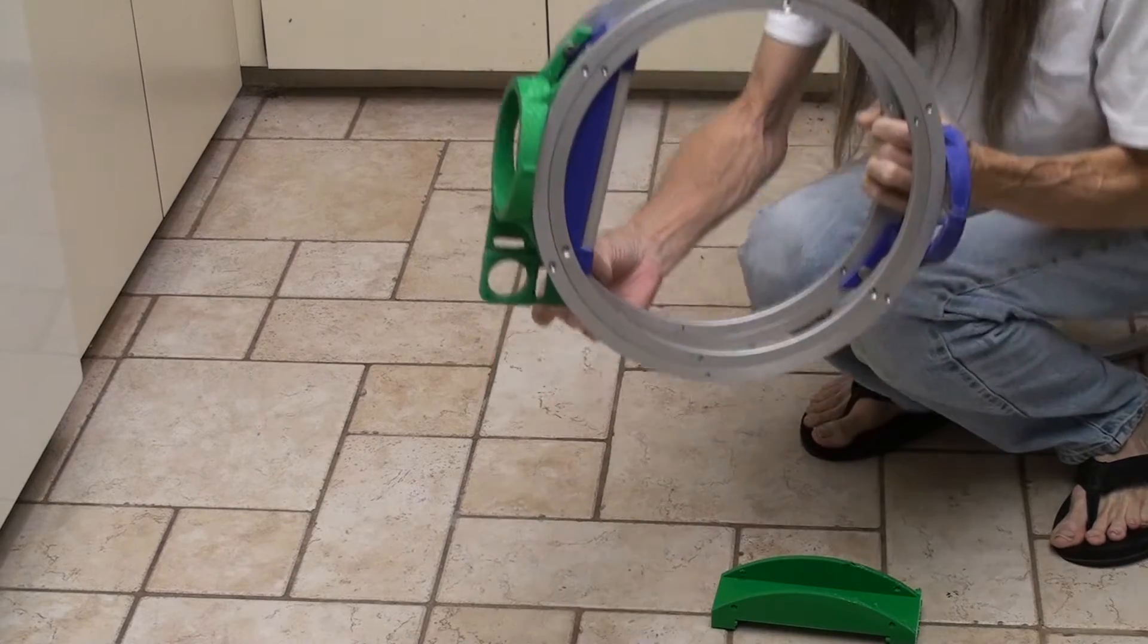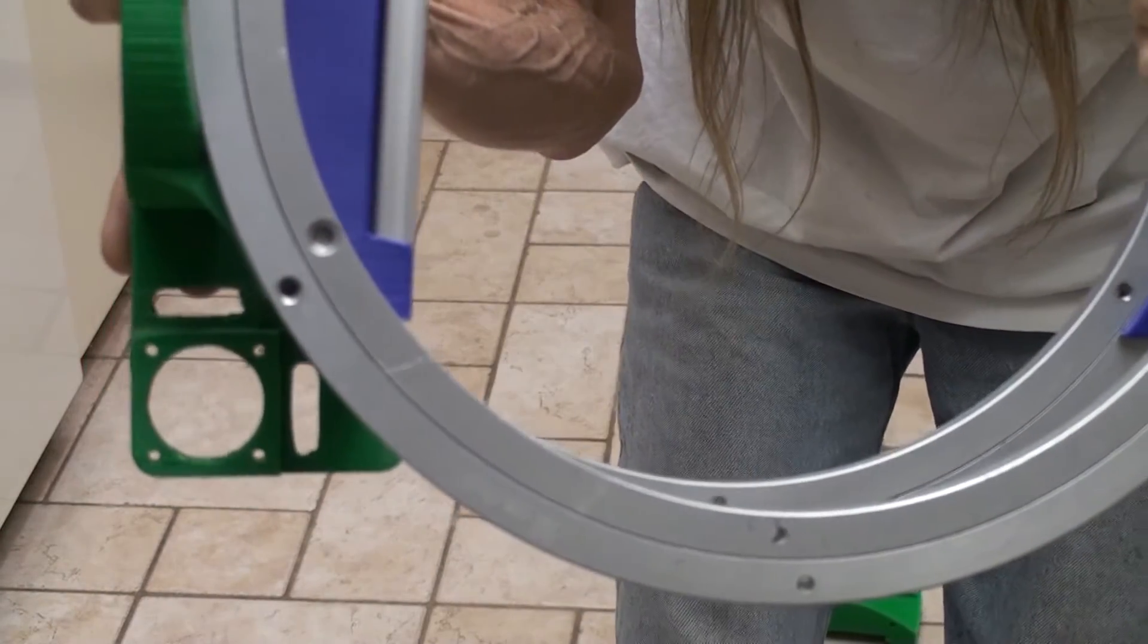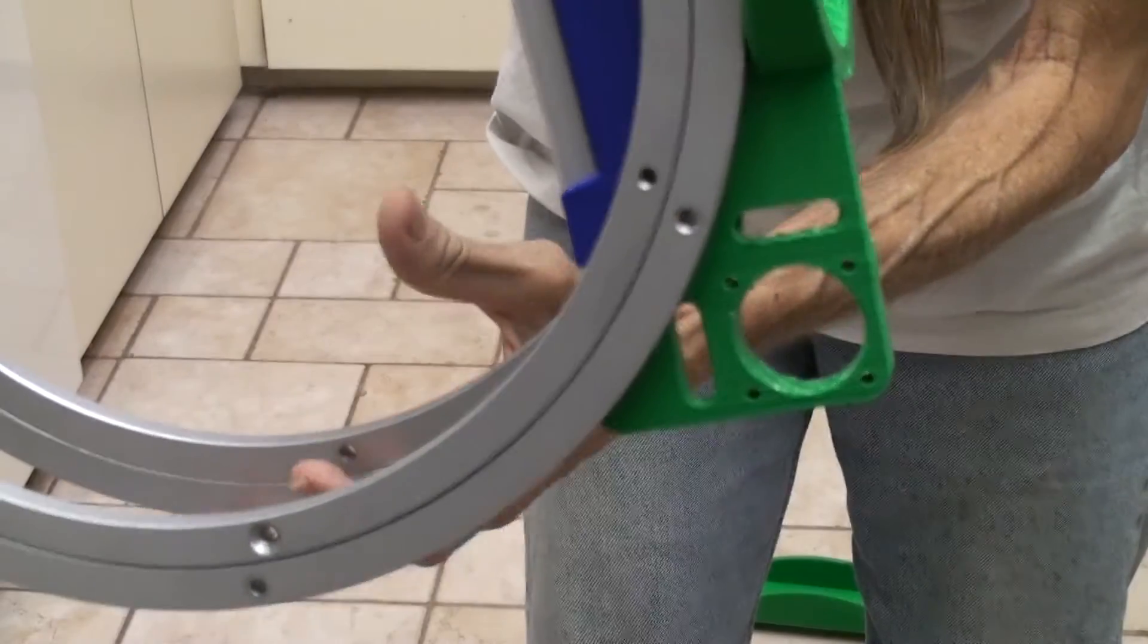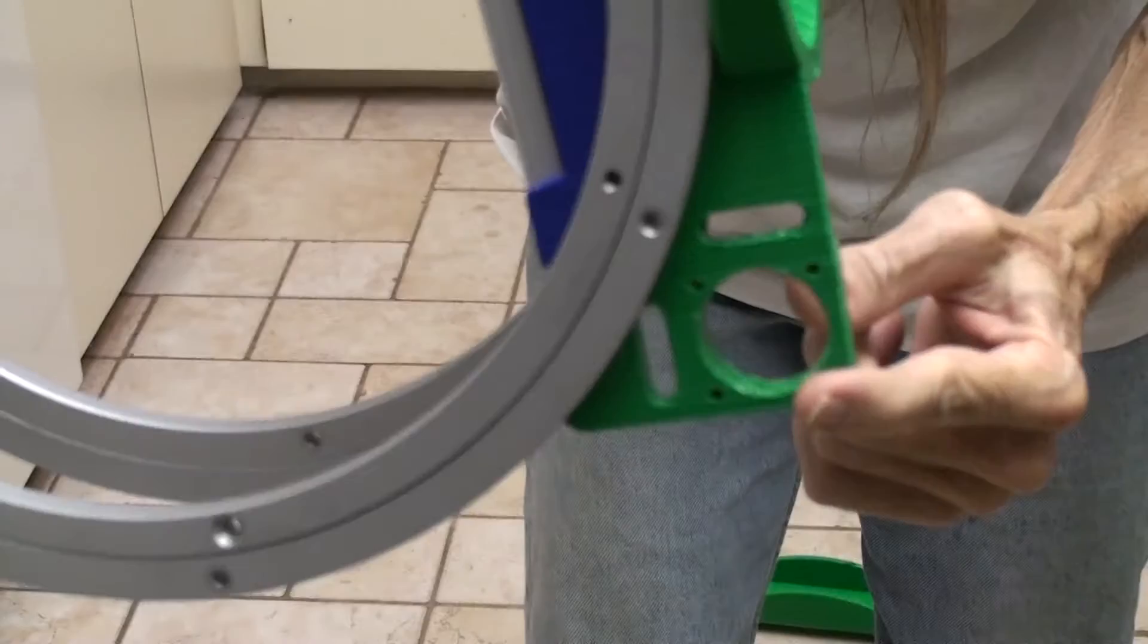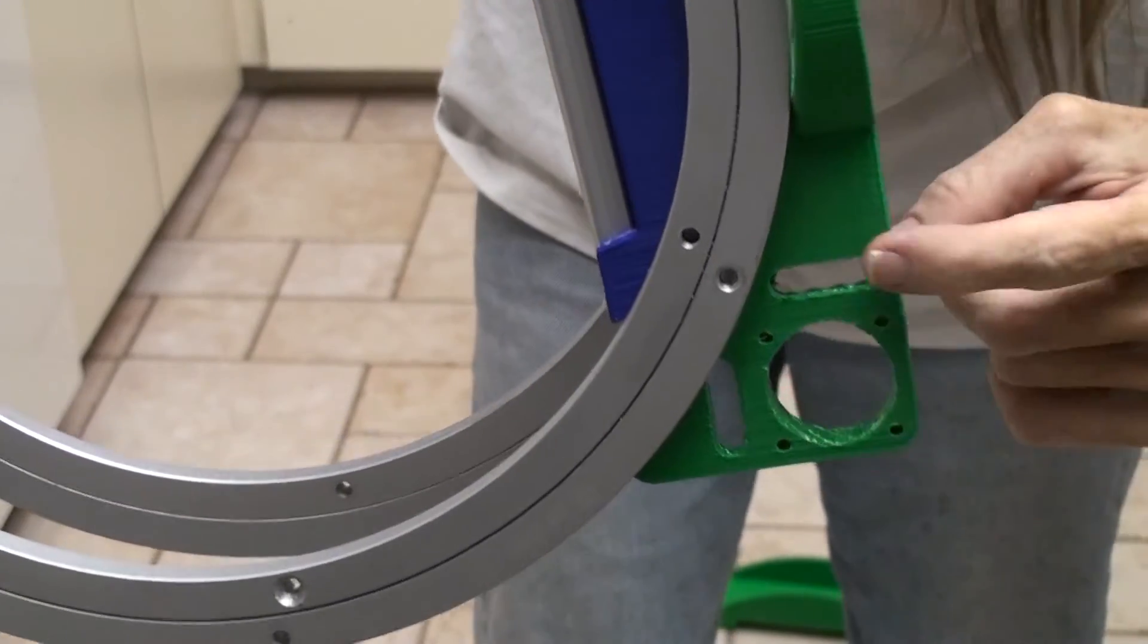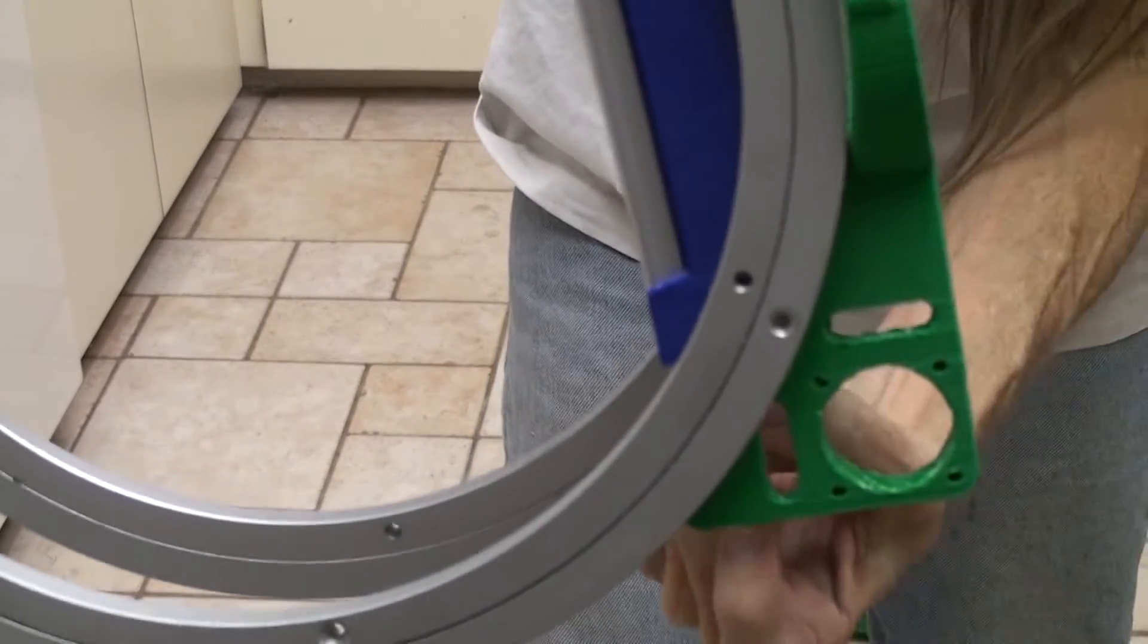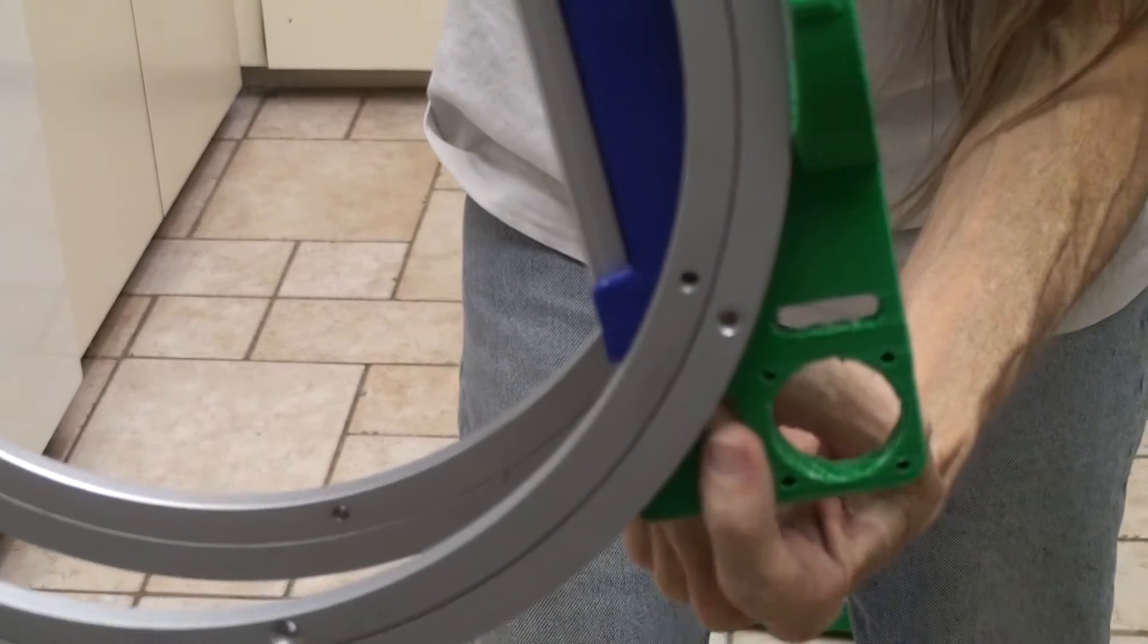And I'll give you a closer look at the motor mount. The motor goes here. And there will be two idlers here and here which can be adjusted to tension the belt.